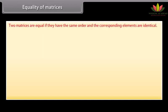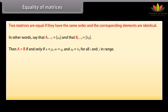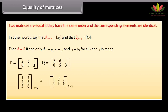Equality of matrices. Two matrices are equal if they have the same order and the corresponding elements are identical. In other words, if A (n by m) = [aᵢⱼ] and B (p by q) = [bᵢⱼ], then A equals B if and only if n = p, m = q, and aᵢⱼ = bᵢⱼ for all i and j. Here are two matrices which are not equal even though they have the same elements.